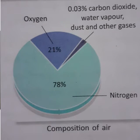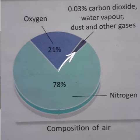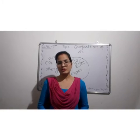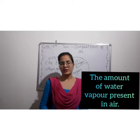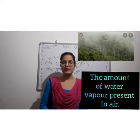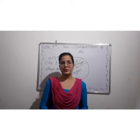You see this circle. The air contains 78% of nitrogen, 21% of oxygen, 0.03% of carbon dioxide, and other gases. Air also contains water vapor. The amount of water vapor present in air is known as humidity. Air also contains smoke and dust particles.